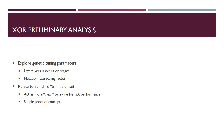Before we dove into the complex problem of playing blackjack, we wanted to verify that the approach would work, so we chose to do a very simple XOR problem with the genetic algorithm first. It's well understood, a very standard example of a neural network implementation, uses a very small network, and would give us a good proof of concept to make sure we were in fact training correctly and that our code worked.